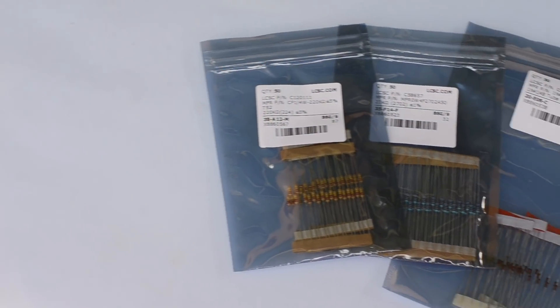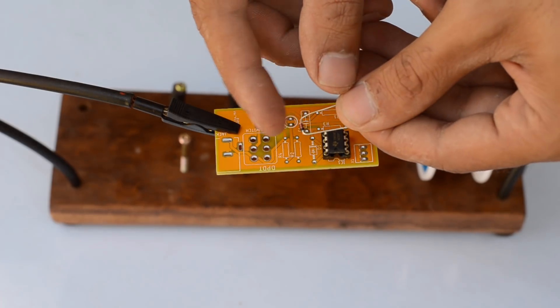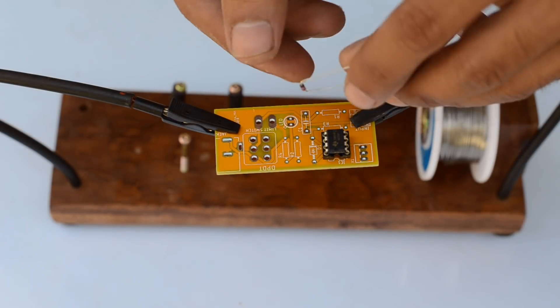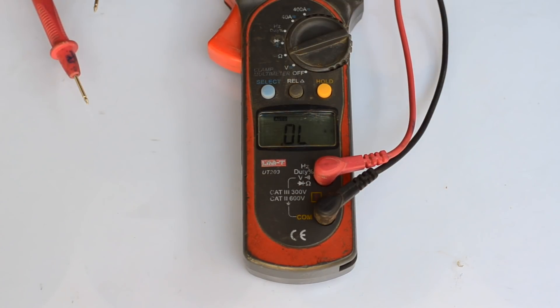Up next, I started placing the complementary components which includes 1N4148 diode and a bunch of resistors. Just ensure their values using a multimeter before placing them onto the PCB.